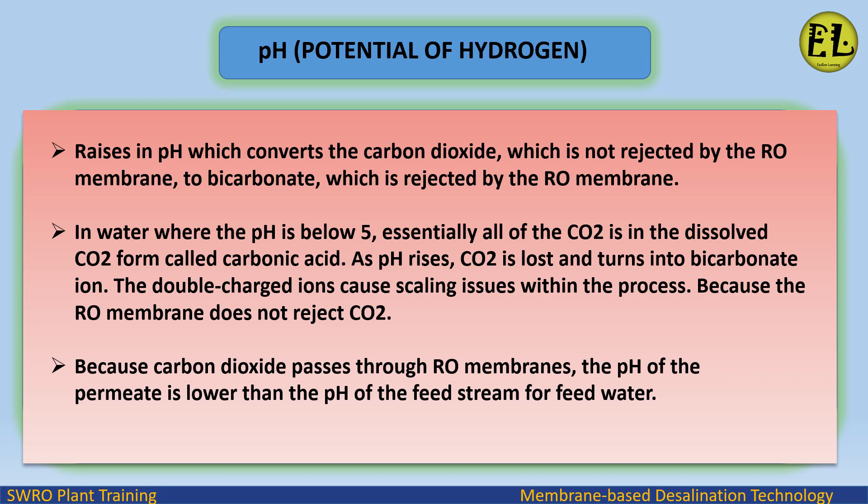Because the RO membrane does not reject CO2, and carbon dioxide passes through RO membranes, the pH of the permeate is lower than the pH of the feed stream.